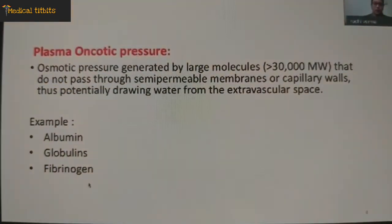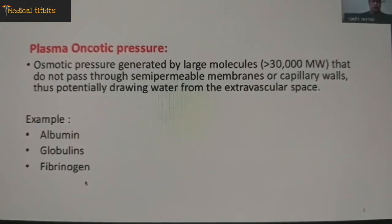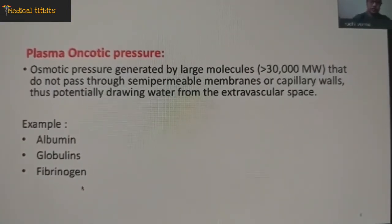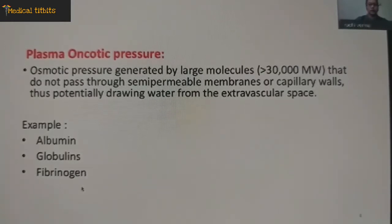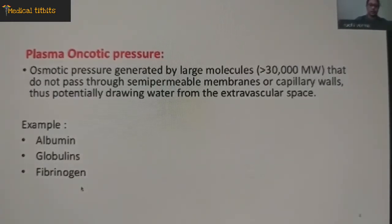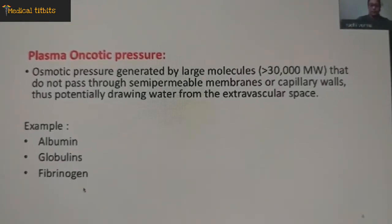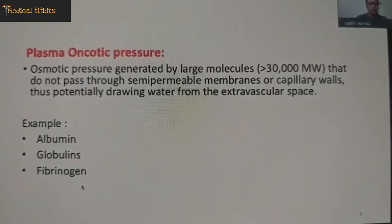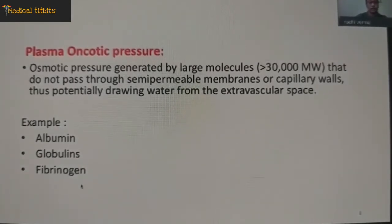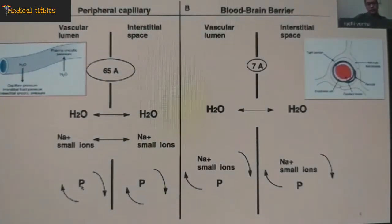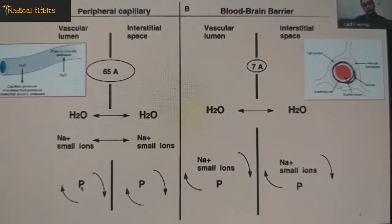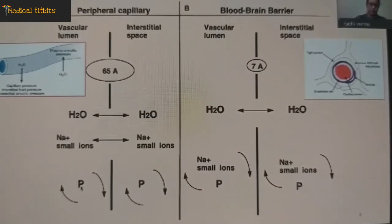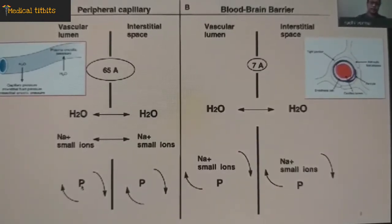The second determinant is plasma oncotic pressure. Plasma oncotic pressure is the osmotic pressure that is generated by large molecules that do not pass through the semi-permeable membrane, so it draws water from the extracellular space. It is mainly produced by albumin and to a lesser extent by immunoglobulins, fibrinogen, and other large molecular weight plasma proteins.